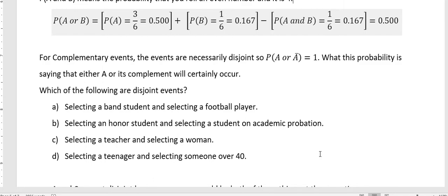Look at the first one, selecting a band student and selecting a football player. Is it possible somebody could play in the band and be on the football team? Yes. Those are not disjoint events, because they could happen. Somebody could be in both of those sets.